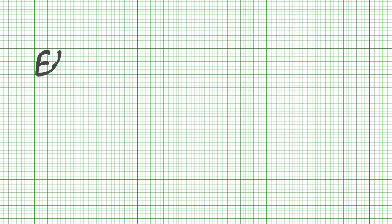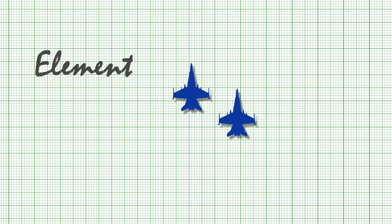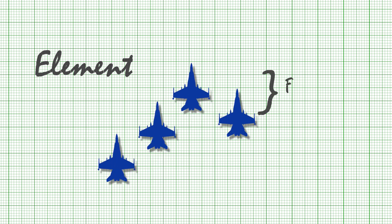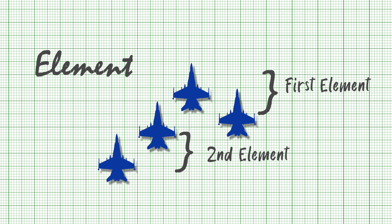Element. In a multi-ship formation, an element is a subunit of the formation — usually a pair. In a four-ship formation, the first element is ordinarily comprised of dash one and dash two. In an odd-numbered multi-ship formation such as a three-ship, the second element can be comprised of a single aircraft.